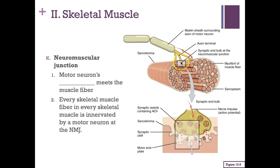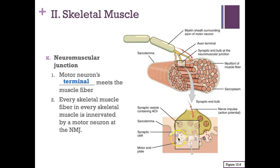To contract the muscle, a nerve impulse travels through the neuromuscular junction. A motor neuron has axon terminals that meet the muscle fiber. The place where the axon terminal meets the muscle fiber — with invaginations within the sarcolemma — is called the motor end plate.